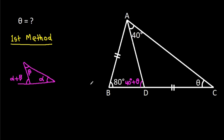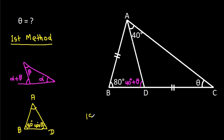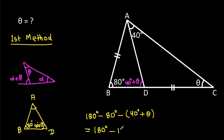And now, in triangle ABD, this angle is 80 degrees and this angle is 40 degrees plus theta. So this angle will be 180 degrees minus 80 degrees minus 40 degrees plus theta, which is 180 degrees minus 120 degrees minus theta. So this angle will be 60 degrees minus theta.